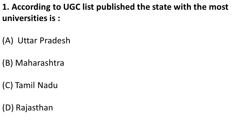The first question is: according to UGC, which state has the most number of universities? The most number of universities are in Rajasthan — the number is 76. Also, the most number of private universities (46) are in Rajasthan, the most number of deemed universities (28) are in Tamil Nadu, and the most number of state universities (29) are in Uttar Pradesh. So remember these four things. The correct answer is Rajasthan with 76 universities.